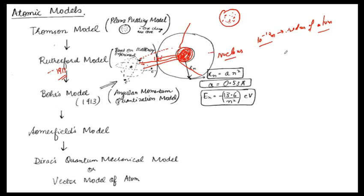Rutherford explained in his model that positively charged particles are present in the center — the nucleus — while negatively charged particles are present in the rest of the atom. The positive charge is of the order of 10 to the power minus 15 meters. However, this model also was not successful because it did not explain the stability of the atom or why the energy distribution of the atom is discrete.